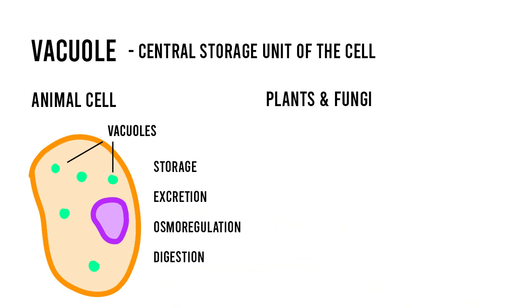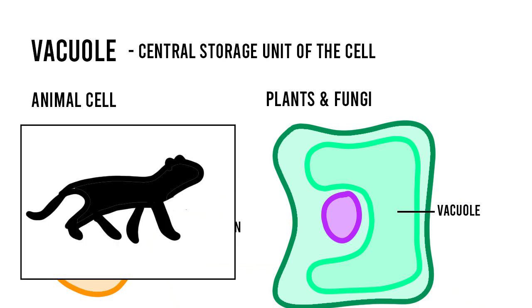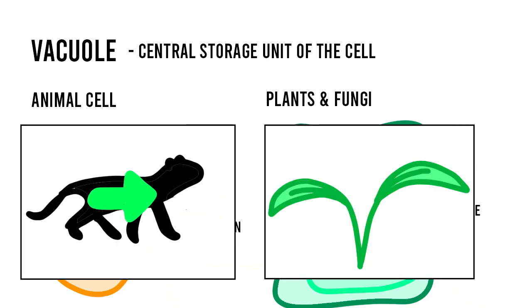However, in plants and fungi, the vacuoles, referred to as the central vacuole, are significantly larger. This is because animal cells use most of their energy on metabolic activities, therefore spending less energy on their vacuoles. This makes sense, since animals move around significantly more than plants do to get their food.